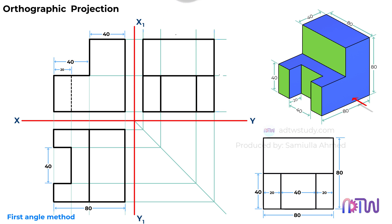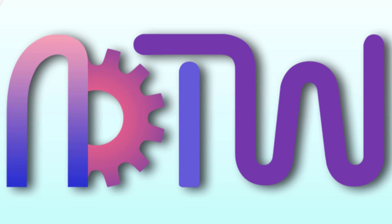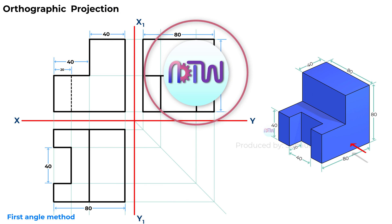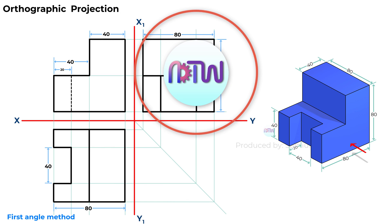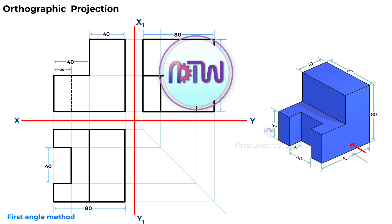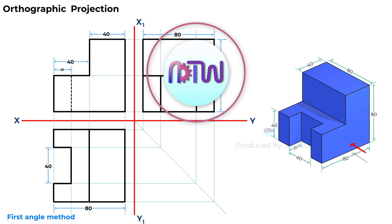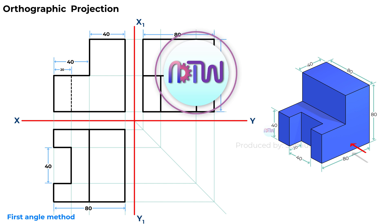This completes the slot and the orthographic views of the given isometric figure. I hope this video helped you understand how to draw the orthographic view of the given isometric view. If you like the video, click on the like button, and if you are new to my channel, click on the subscribe button to get all my latest videos.